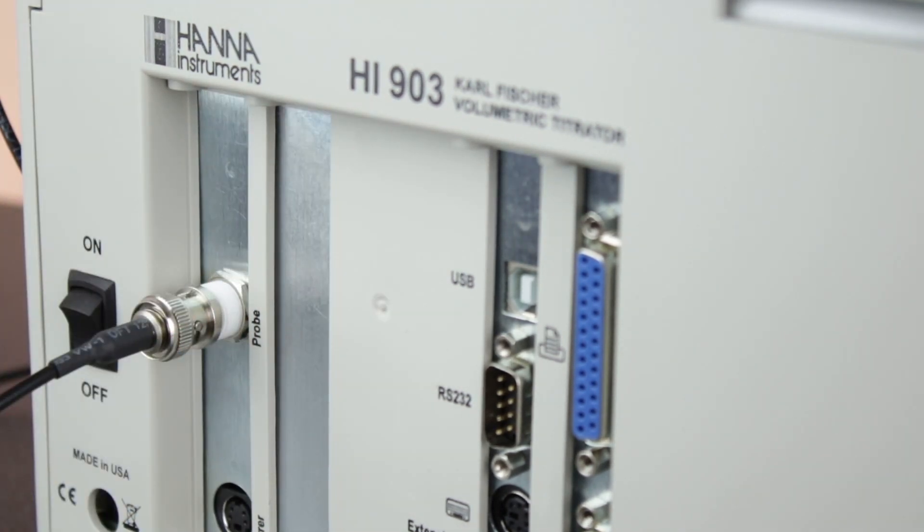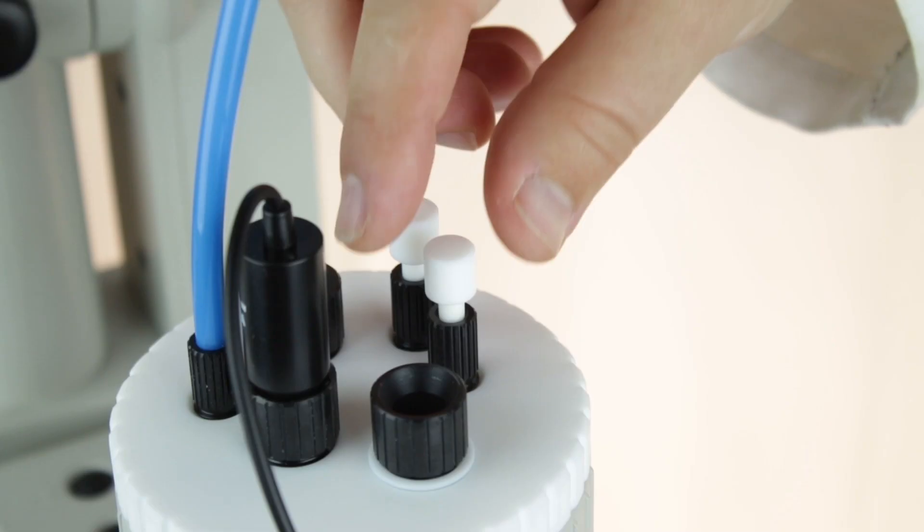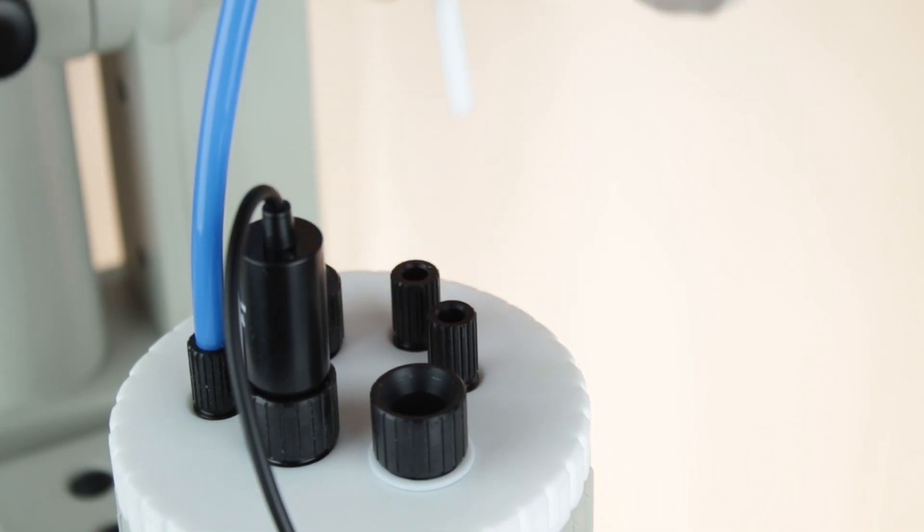Next, we'll install the tubing for the solvent handling system. White plugs cover the solvent ports. Remove the plugs and loosen each of these fittings. There is no need to remove these completely from the beaker top.